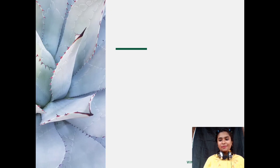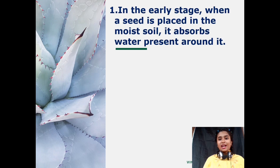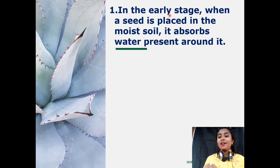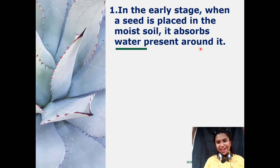The first step: in the early stage, a seed is placed in moist soil. 'Moist' means wet soil. The seed absorbs water present around it. When we water the plants, the seed absorbs that water which is present in the soil.